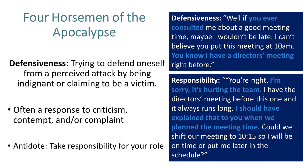The main antidote to defensiveness is to take responsibility for your role in the situation, even if it is only for part of the issue. Doing so prevents escalation, and from there people can work to a compromise. An example of taking responsibility: 'You're right, I'm sorry, it's hurting the team. I have the director's meeting before this one and it always runs long. I should have explained that to you when we planned the meeting time. Could we shift our meeting to 10:15 so I'll be on time, or put me later in the schedule?'